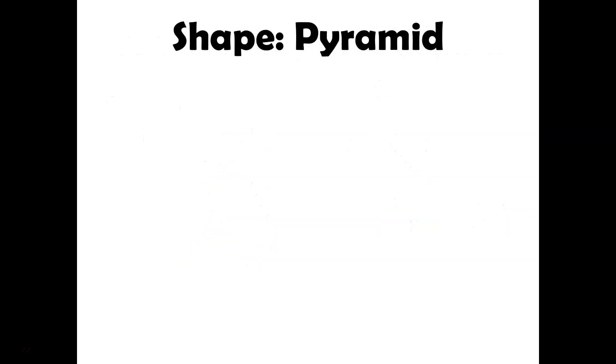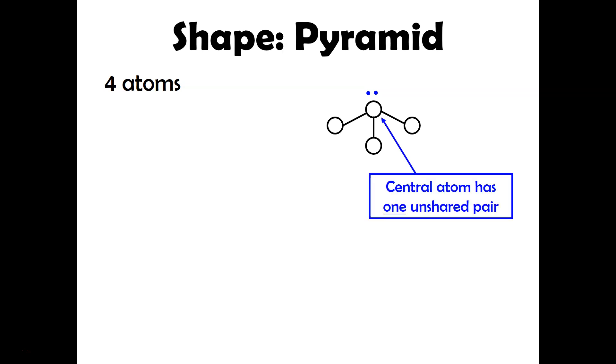Next up is pyramid or sometimes it is called trigonal pyramid. And so this is exactly what it sounds like with four atoms. You're going to kind of have this bent over shape. But again, if you're looking at this, notice right now there is no unshared pairs around the central atom. So there has to be an unshared pair on the central atom in order to make it that pyramid shape. An example would be ammonia. So for NH3, that would be the Lewis structure.